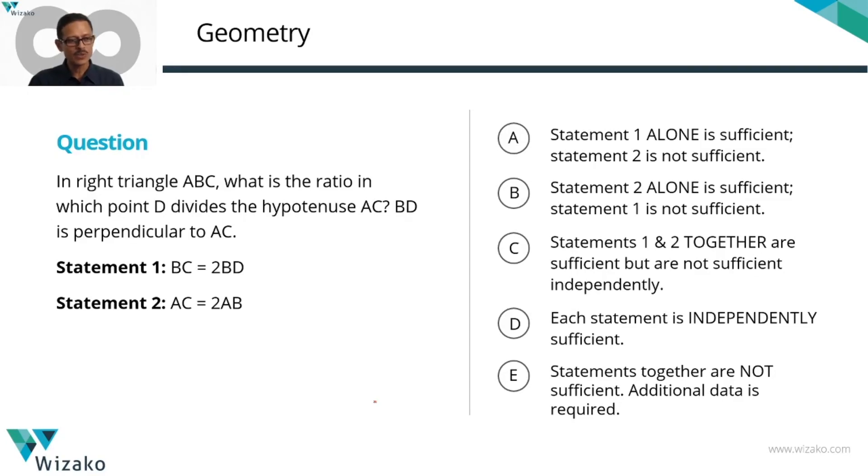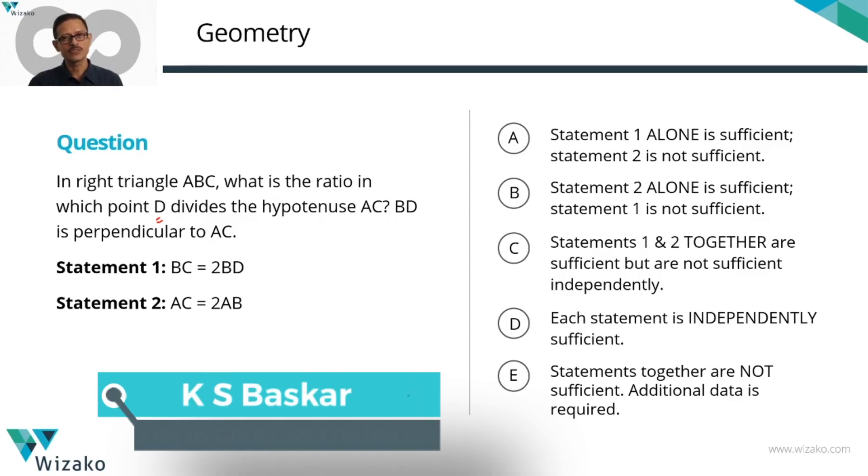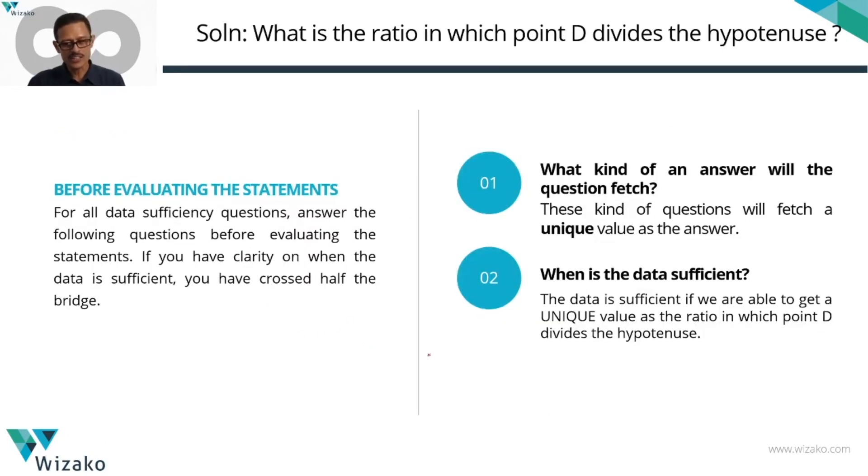In right triangle ABC, what is the ratio in which point D divides the hypotenuse AC? So AC is the hypotenuse. We'll have to figure out in what ratio does D divide it. BD is perpendicular to AC. In what ratio does it divide?